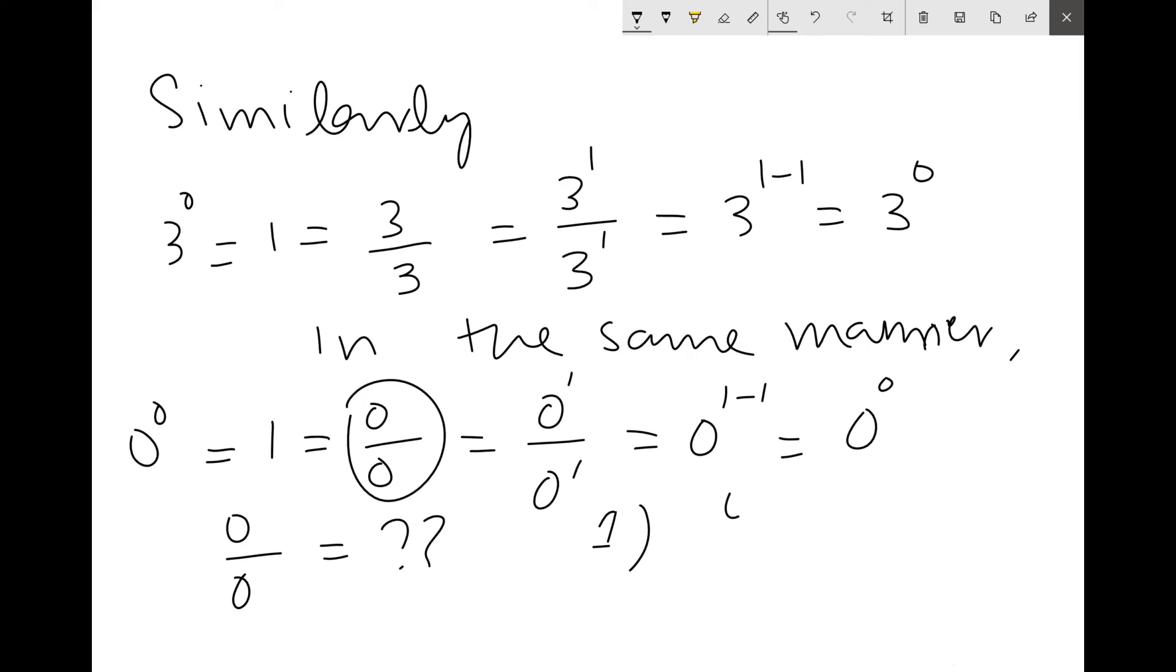One can argue that zero by zero is equal to zero, because dividing zero by any number is equal to zero.